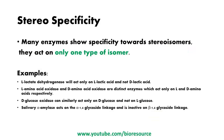Many enzymes show specificity towards stereoisomers, acting on only one type of isomer — this is called stereospecificity. For example, L-lactate dehydrogenase acts only on L-lactic acid but not on D-lactic acid. L-amino acid oxidase and D-amino acid oxidase are distinct enzymes acting only on L- and D-amino acids respectively. D-glucose oxidase acts only on D-glucose, not on L-glucose. Salivary alpha-amylase acts on alpha-1,4-glycosidic linkages but is inactive on beta-1,4-glycosidic linkages.